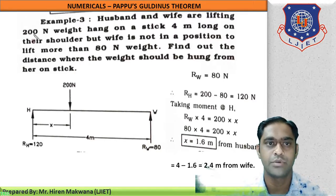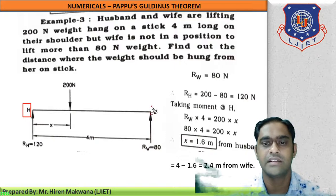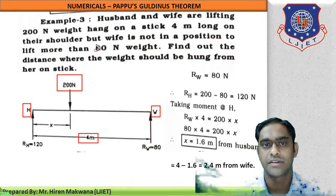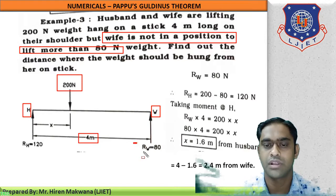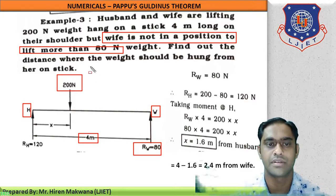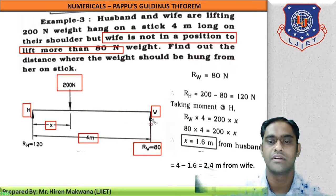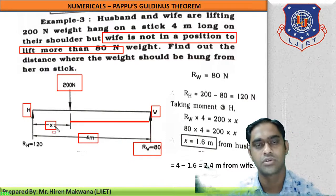Example 3: a husband and wife are lifting a 200 N weight using a stick 4 meters long. The husband stands on the left side and the wife on the right side. The wife cannot lift more than 80 N. We need to find the distance from the wife where the weight should be hung. The distance x is measured from the husband's side, so the distance from the wife is 4 minus x.